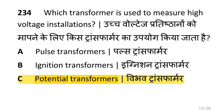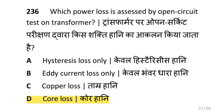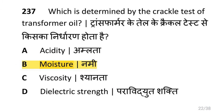Which transformer is used to measure high voltage installations? That is potential transformers. How is moisture controlled in the breather fitted on power transformers? By using silica gel. Which power loss is assessed by the open circuit test on a transformer? That is core loss. What is determined by the crackle test of transformer oil? That is moisture.